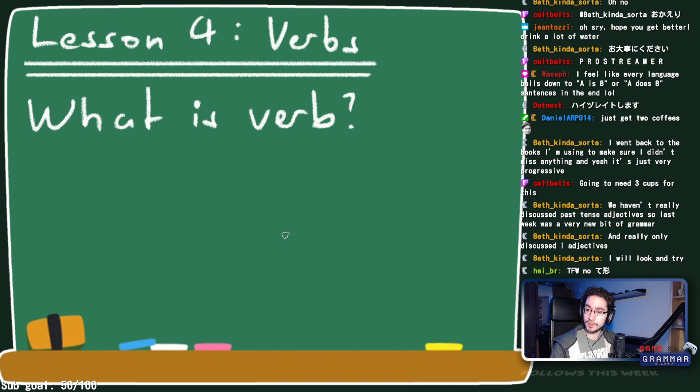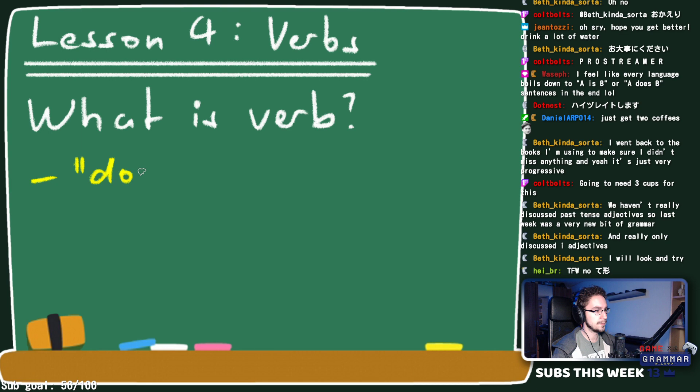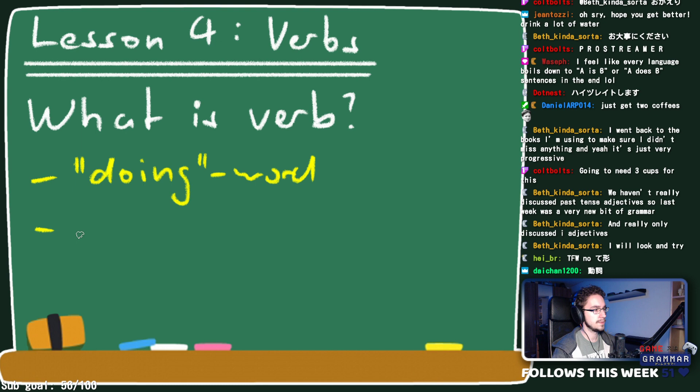A verb is a class of words — a part of speech, just like nouns and adjectives. Verbs have a pretty important role in most languages, especially Japanese. Verbs are doing words; they describe actions. In English, 'to run' is a verb because it describes the action of running.